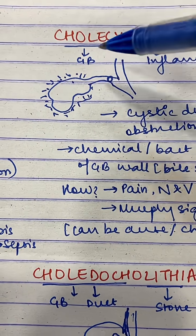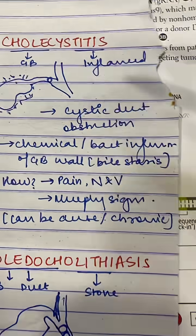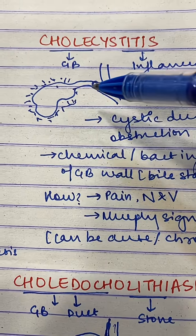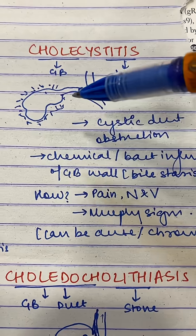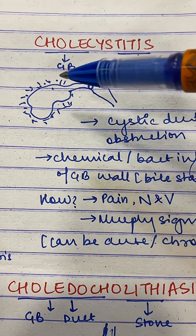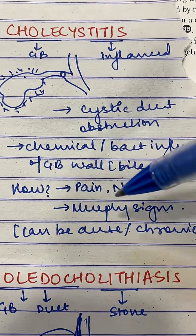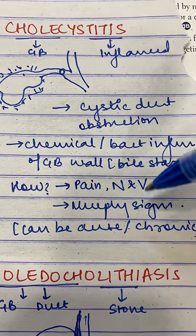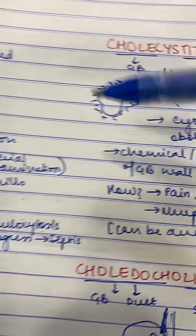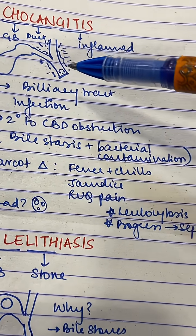Cholecystitis is inflammation of the gallbladder itself. A stone impacted in the cystic duct causes stasis; this presents with pain, nausea, and vomiting. The inflamed gallbladder, every time it touches the abdominal wall — especially when pressure is applied — causes pain, and inspiration is arrested; that is your Murphy's sign. This can be acute or chronic. Sometimes you might have cholangitis due to Clonorchis infection, as it can cause obstruction.